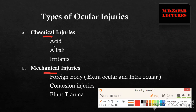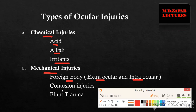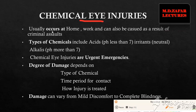Chemical injuries are caused by acids, alkalis, or irritants, whereas mechanical injuries are caused by foreign bodies which could be extraocular or intraocular. Furthermore, mechanical injuries are caused by contusion injuries as well as blunt trauma. Chemical injuries usually occur at home or at the workplace and they are usually a result of criminal assault.